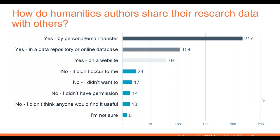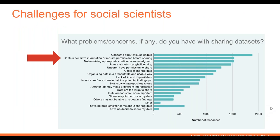Also thinking about social scientists — this is from a different survey, the State of Open Data. It's not focused specifically on social science researchers, but it illustrates the type of challenge most relevant to them. The question asked was what problems or concerns these researchers had with sharing datasets. The second highest reason for concern was that the data might contain sensitive information or require permission from the research participants before it could be shared, which would be quite a challenge for social sciences researchers specifically.